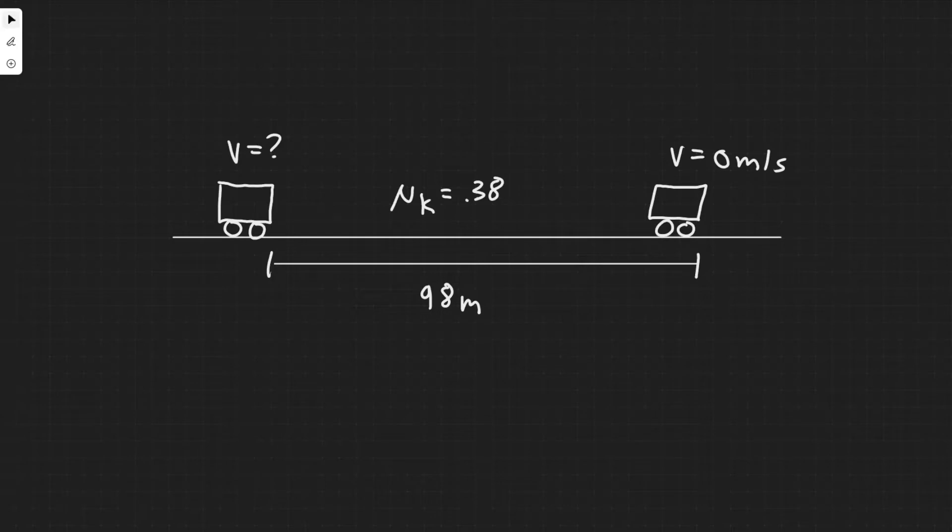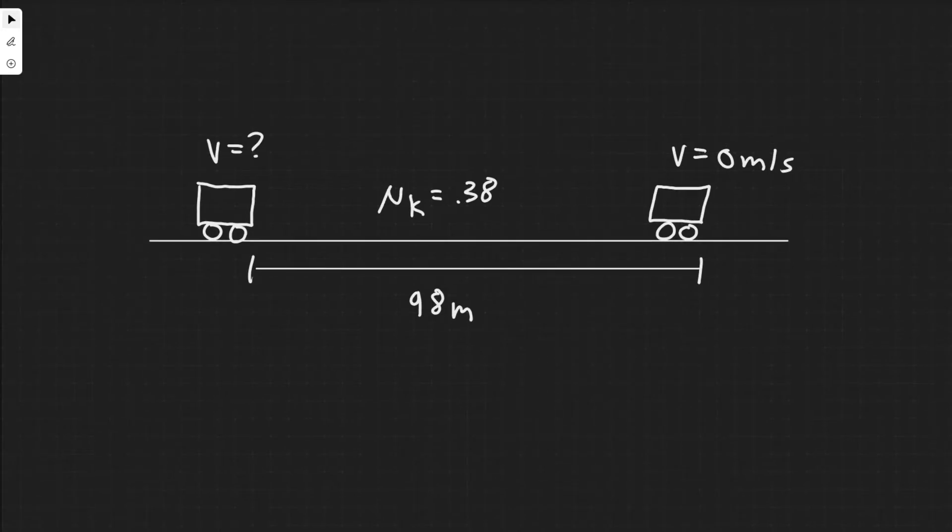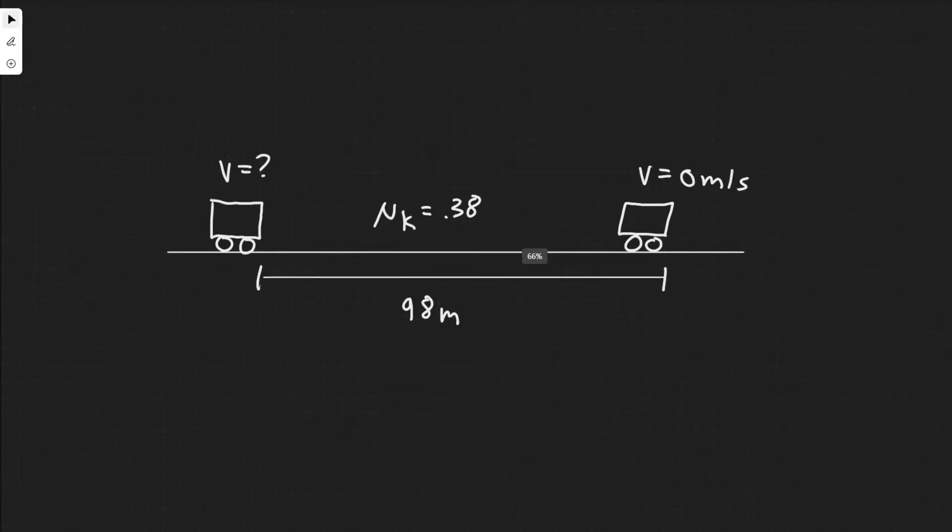The first thing we need to do is draw what's going on and try to understand it. We have this car, and it's going to hit the brakes and travel for 98 meters and then come to a stop. At this point we know the velocity is zero because it's stopped. They give us the coefficient of kinetic friction as 0.38 and we're trying to find the velocity of the car when it started, right when it slammed on the brakes.